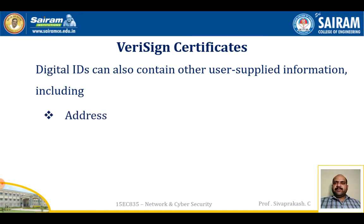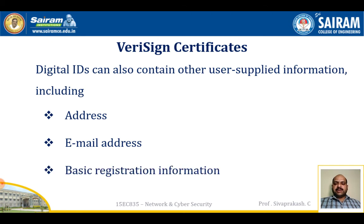Digital IDs can also contain other user-supplied information, including email address and basic registration information like country, zip code, age, and gender. VeriSign provides three levels or classes of security for public key certification. A user requests a certificate online at VeriSign's website or other participating websites. Class one and class two requests are processed online and in most cases take only a few seconds to approve.